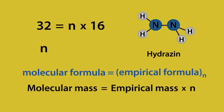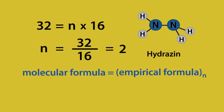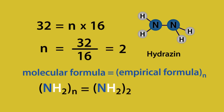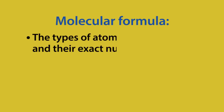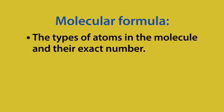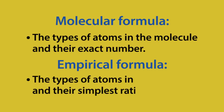Therefore, N is 32 divided by 16, or 2. So now, the molecular formula is the empirical formula times N — that's NH2 times 2 — which gives us N2H4. To recap: the molecular formula tells us the types of atoms in a molecule and their exact number, and the empirical formula tells us the types of atoms in the molecule and their simplest ratio.